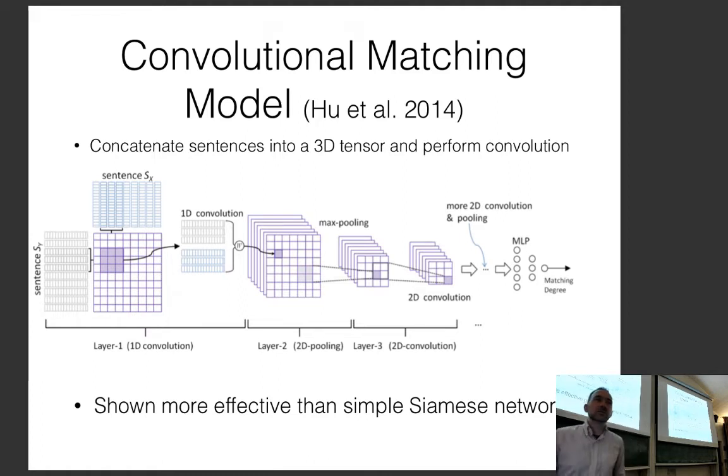This is an example of when you would use 2D convolution in an NLP task.